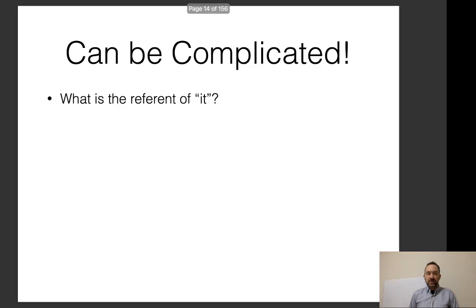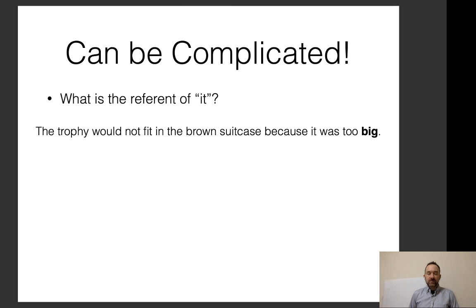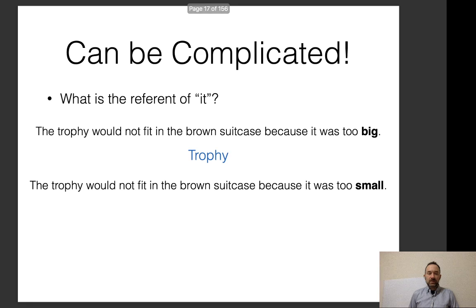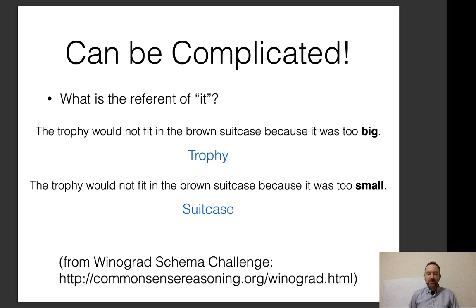These dependencies can be complicated. For example, consider the referent of 'it' in 'The trophy would not fit in the brown suitcase because it was too big' — here 'it' refers to trophy because the trophy is too big. But in 'The trophy would not fit in the brown suitcase because it was too small,' 'it' refers to suitcase. These are from the Winograd schema challenge; there's also a recent larger version called Winogrande.